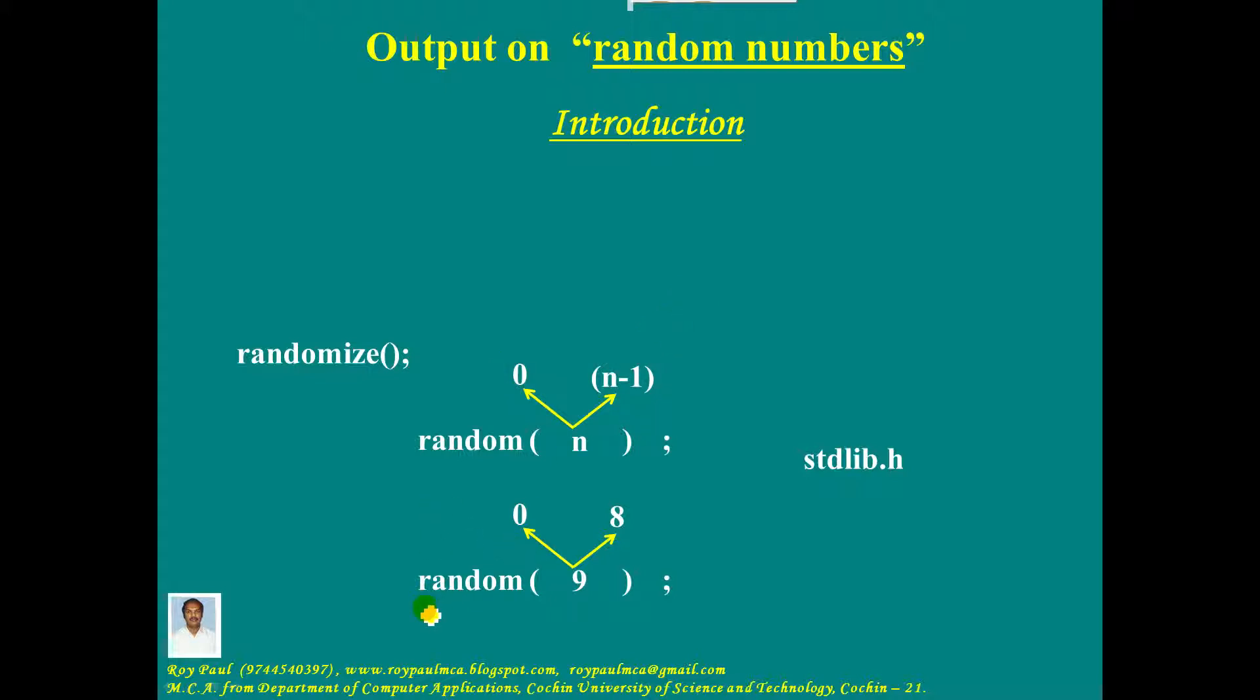Second point: for the proper working of random, first you should call randomize, and only after that you should call the random function. And the last point: the header file corresponding to randomize and random is stdlib.h.